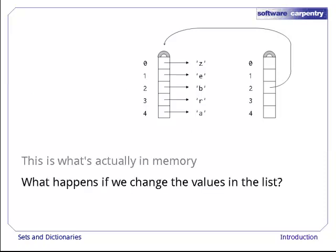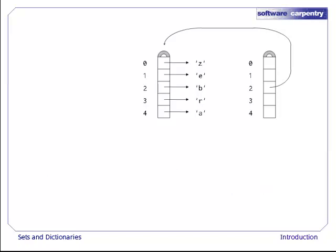What happens if we now change the values in the list? We start with this, then change the first character in the list from z to s. If we recalculate the hash code, this list should be put in location 0, but it's actually still in location 2. Our list is in the wrong place.